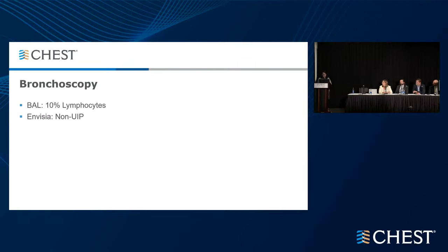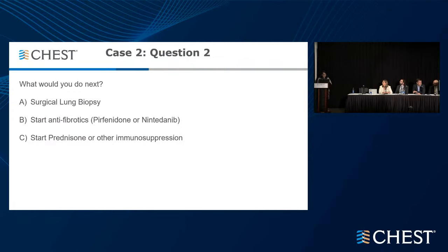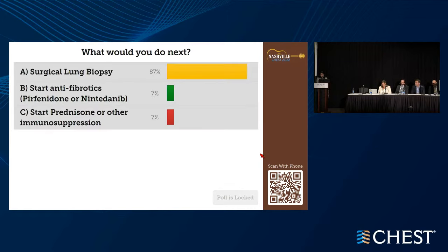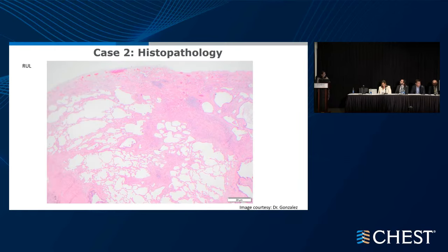With this patient, we got a BAL which showed only 10% lymphocytes, and the genomic classifier was non-UIP. So what would you do next? The correct answer was surgical lung biopsy. We did do a surgical lung biopsy, and our pathologist Dr. Gonzalez is here now and will discuss what we saw.